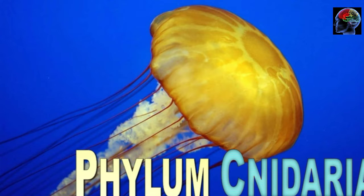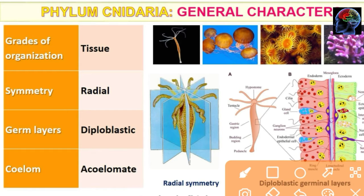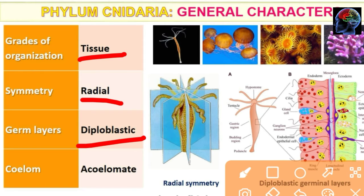First of all, we will see the general characteristics of Phylum Cnidaria. The grade of organization is the tissue cell level. Symmetry is radial symmetry. And this phylum is diploblastic and acoelomate.